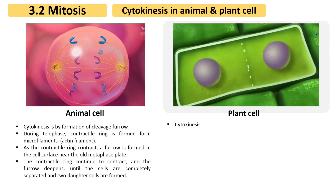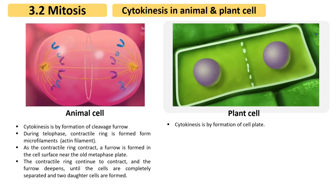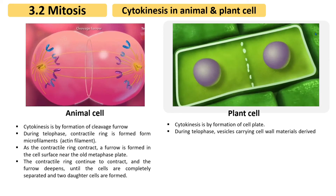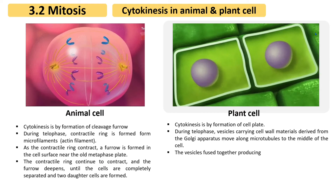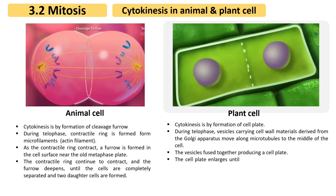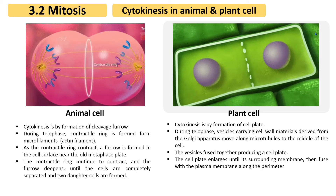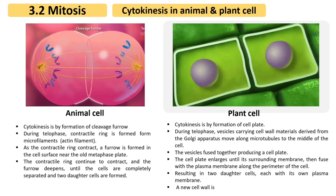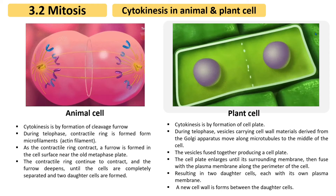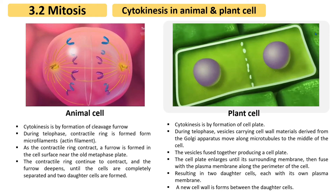In plant cells, cytokinesis occurs by the formation of a cell plate. During telophase, vesicles carrying cell wall materials derived from the Golgi apparatus move along microtubules to the middle of the cell. The vesicles fuse together, producing a cell plate. The cell plate enlarges until its surrounding membrane fuses with the plasma membrane along the perimeter of the cell, resulting in two daughter cells, each with its own plasma membrane. A new cell wall forms between the daughter cells.